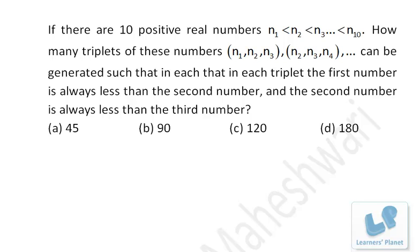Now friends, let's see this question. This is from CAT 2002. If there are 10 positive real numbers n₁ < n₂ < n₃ < ... < n₁₀, that means there are 10 numbers and they are written in ascending order.